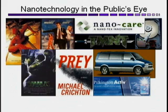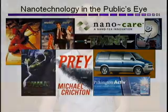Nanotechnology is also in many of the products we use and buy every day, such as stain-resistant clothing, self-cleaning windows, hard drives, and lighter and stronger car parts, such as the running board on the GMC van pictured here. The iPod is another example of nano, although it's actually more nano buzz than actual nanotechnology.